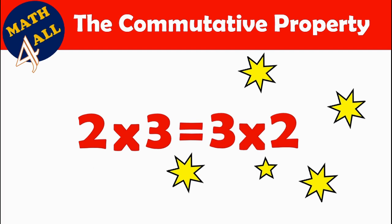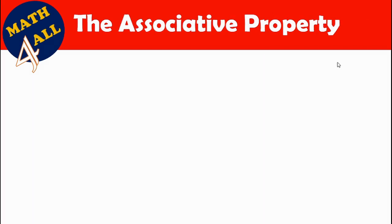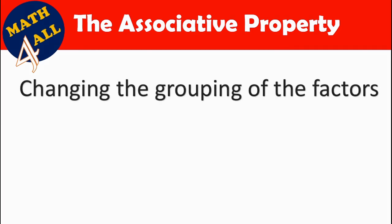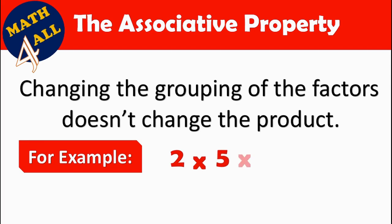Changing the order of factors doesn't change the product. Let's go to the next property: the associative property. It means changing the grouping of factors doesn't change the product. For example, 2 by 5 by 4 — we are multiplying